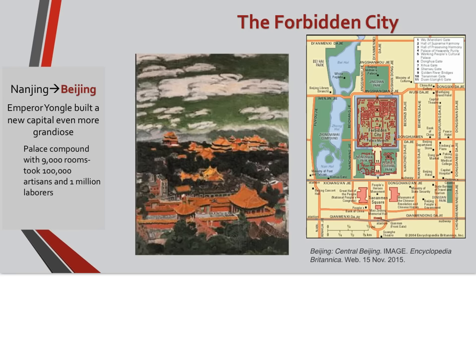One of the favorite topics here is the Forbidden City. After the movement of the capital from Nanjing to Beijing, Emperor Yongle built a new capital even more grandiose than the one in Nanjing. His palace had over 9,000 rooms, took over 100,000 artisans and over one million laborers to build. Looking at the image, you can see how this complex was created as a city within a city — that's why it was called the Forbidden City, because you weren't allowed in there unless you were royalty.